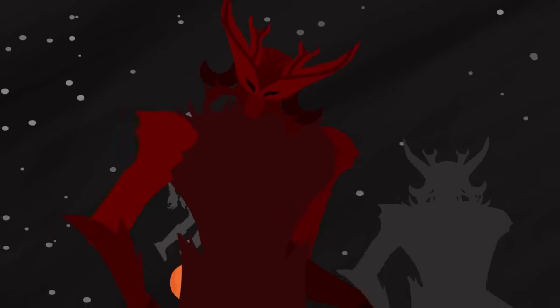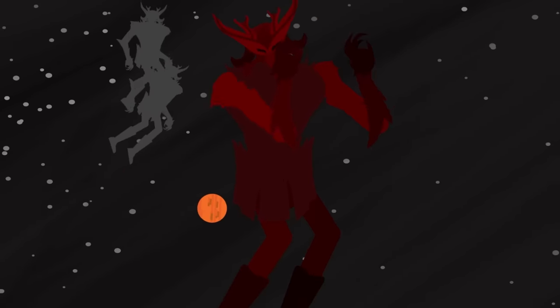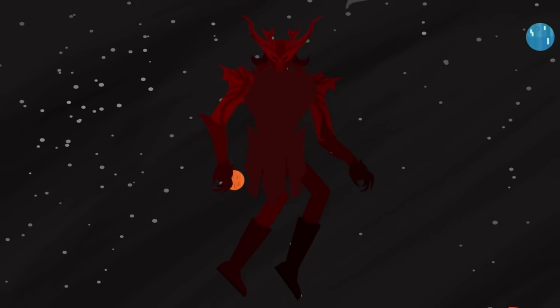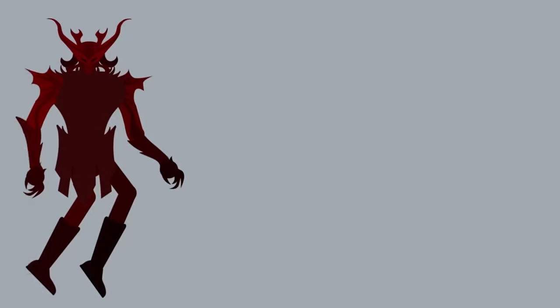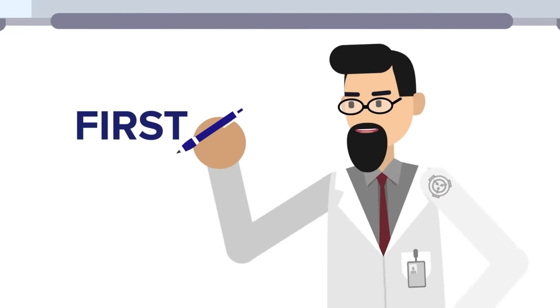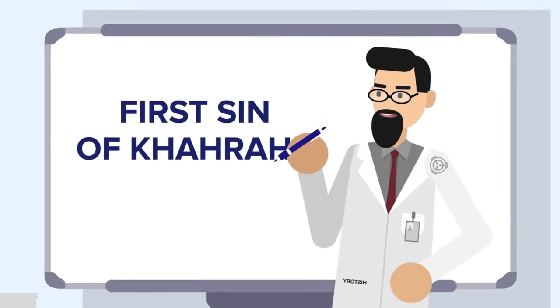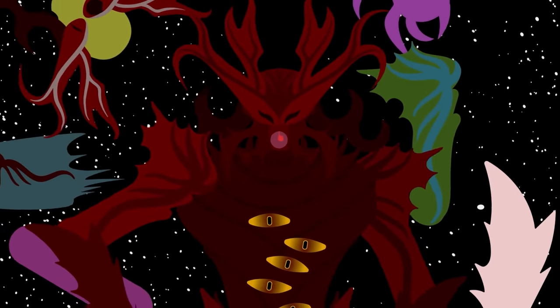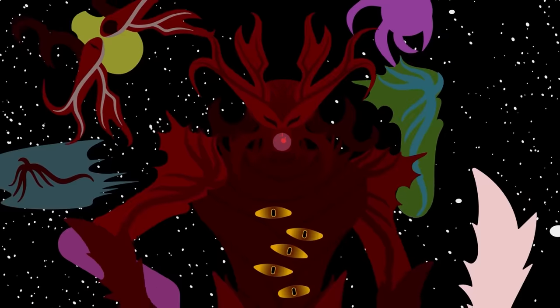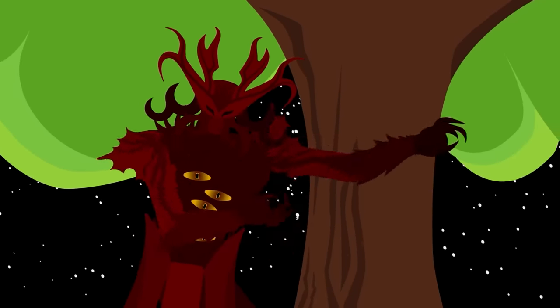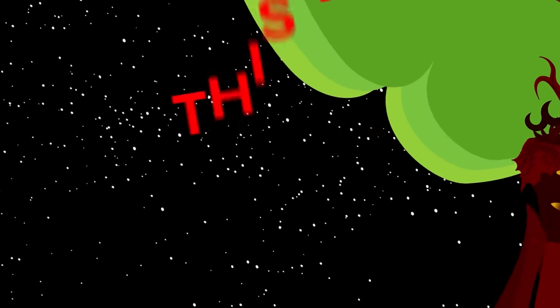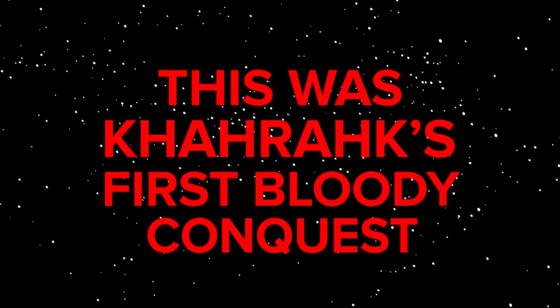And if existence was such pain, what was the point of existing at all? In fact, what was the point of anyone or anything existing if they were all just doomed to this dull suffering? At this moment, Kaharok found his calling: bringing about the end of everything. But first, he needed strength. To achieve this, he devoured his brothers and sisters in the Abyss, stealing their strength and their essence. This is known as the first sin of Kaharok, and he was punished accordingly, with even greater pain as he grew. And of course, this did nothing but strengthen his resolve. Blinded by pain, fury, and pure hatred, he vowed to uproot and destroy the very tree of life itself for putting him through this awfulness.